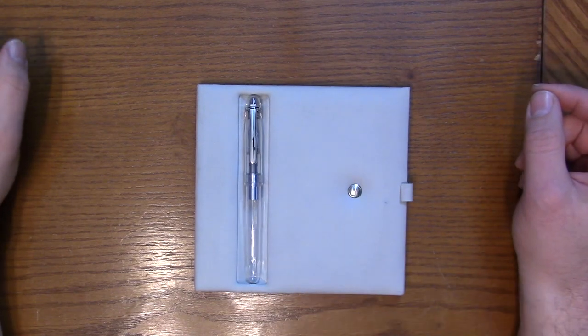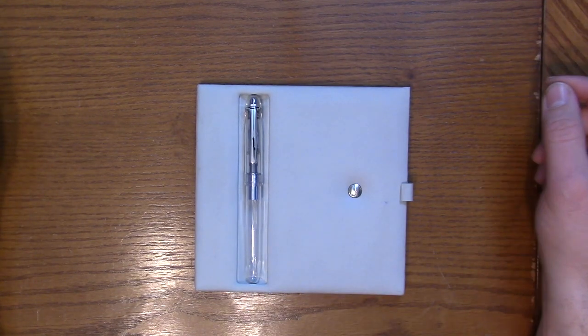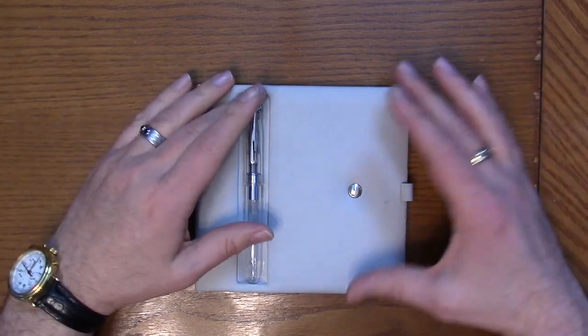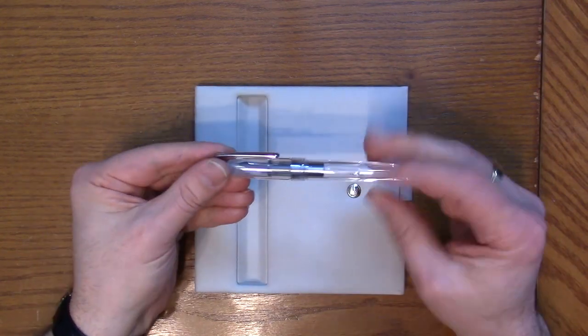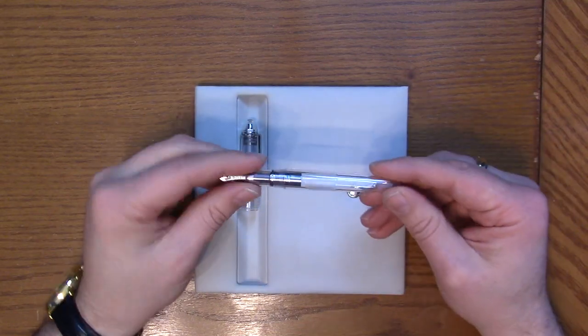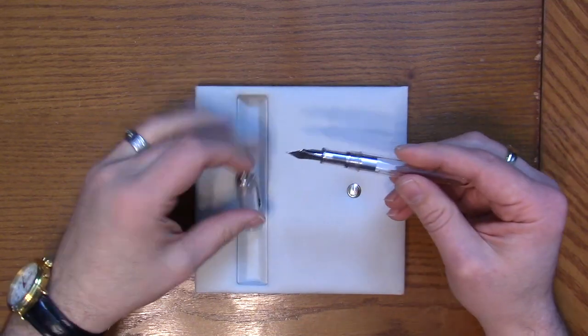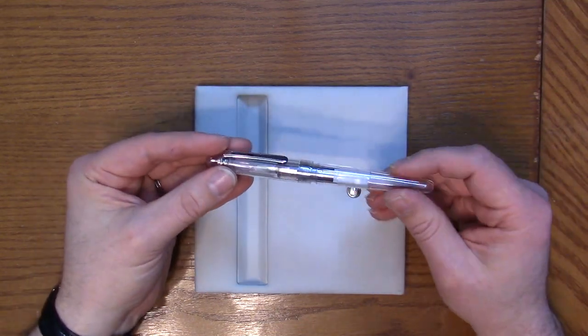Here we have the Platinum 3776 Psi. This is one of the series of pens that they've been putting out. They're pretty much transparent, relating to the lakes around Mount Fuji.